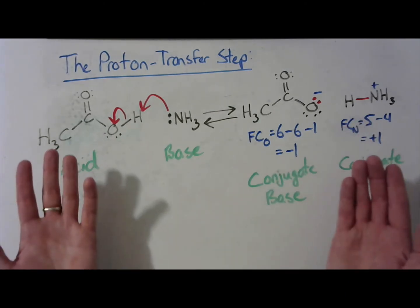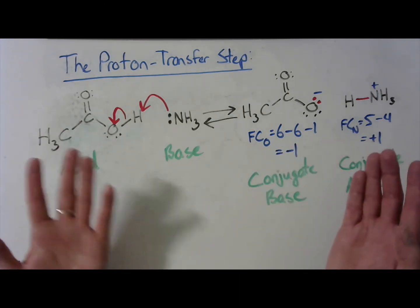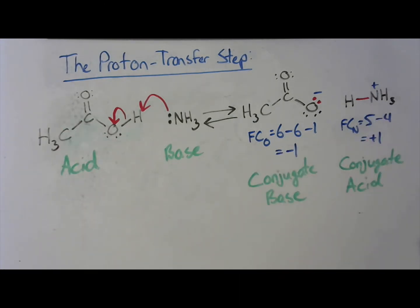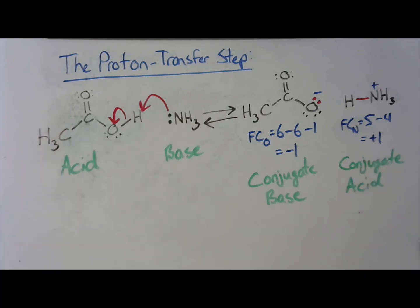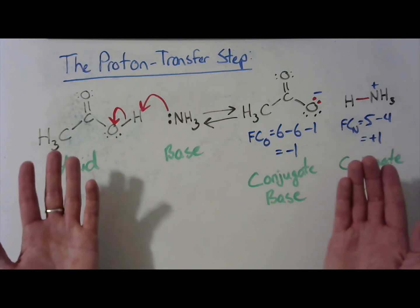So, this is an equilibrium. Which side dominates? Well, we need to look at our pKa values for our two acids, for the acid and for the conjugate acid. So, this is an equilibrium. Which side dominates?